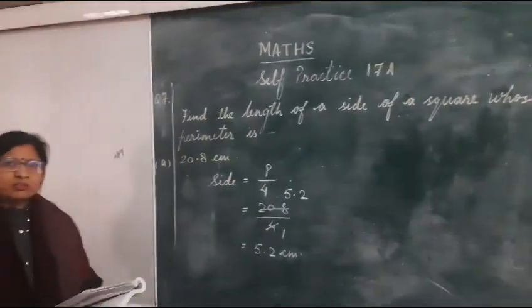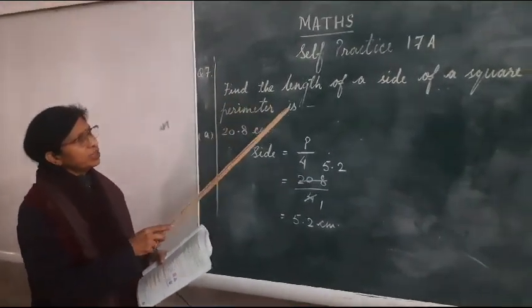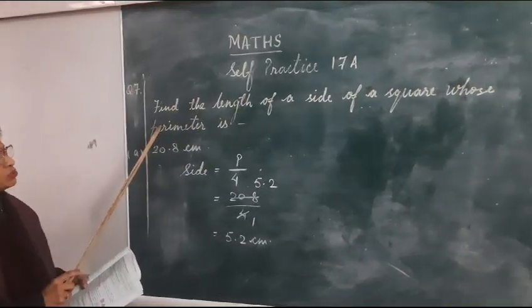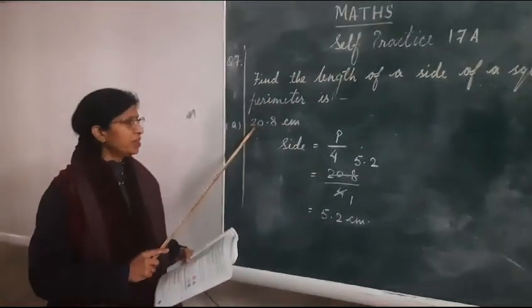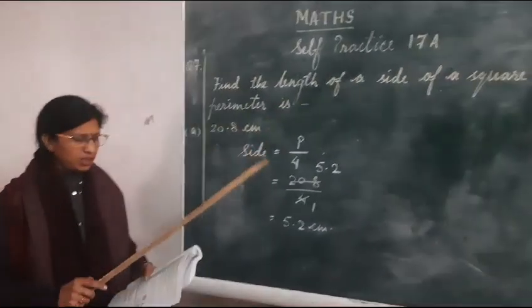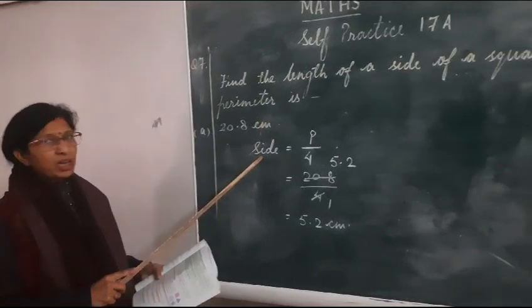We have already done 6 questions of that exercise, now this is the 7th question. The question is find the length of a side of a square whose perimeter is given. In this question, different perimeters are given in the form of a, b, c, d and you have to find out the side of the square.